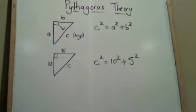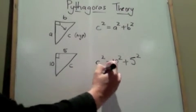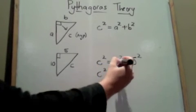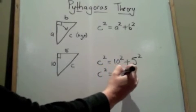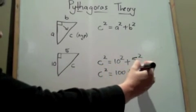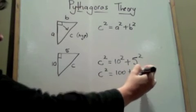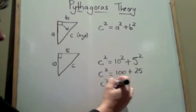To solve this formula, we leave C squared as is, 10 squared is 100 plus 25. So C squared equals 125.